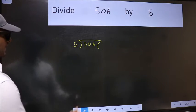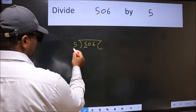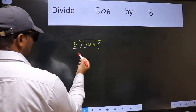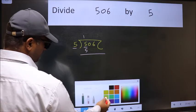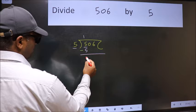Next. Here we have 5. Here also 5. When do we get 5 in 5 table? 5 once is 5. Now we should subtract. We get 0.